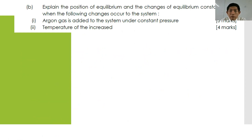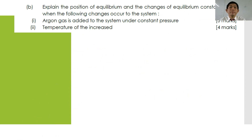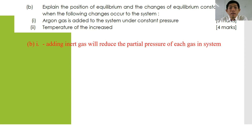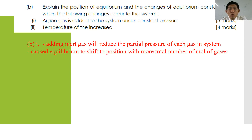For 1B, explain the position of equilibrium and changes in equilibrium constant when the following changes occur. Number 1: argon gas is added at constant pressure. Adding an inert gas has two situations — constant pressure versus constant volume. Under constant volume, equilibrium is unaffected. But here, adding argon at constant pressure decreases the partial pressures of the reacting gases, so equilibrium shifts to the direction with more total moles of gas, which is to the left. The equilibrium constant Kc remains the same.